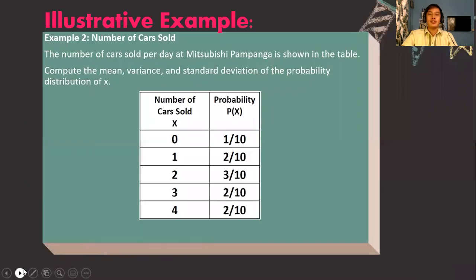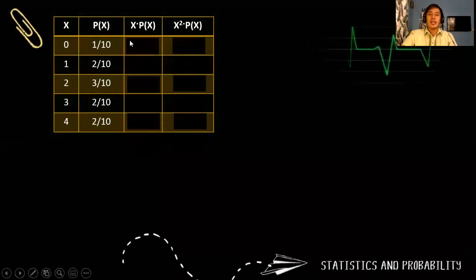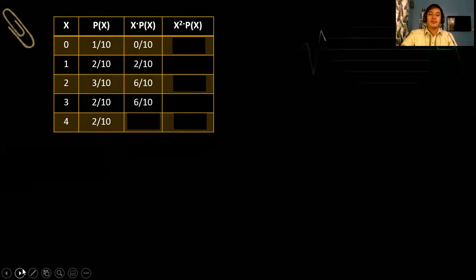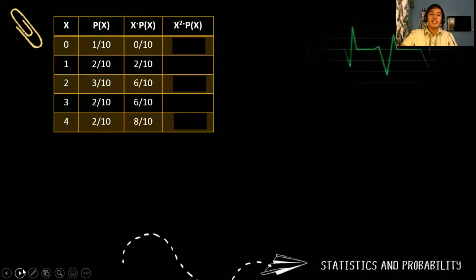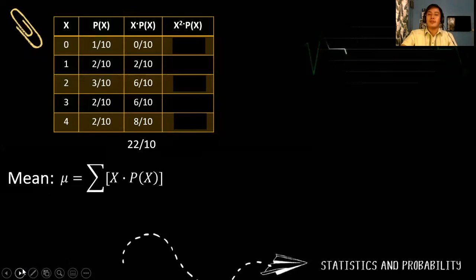Following the same procedure, we make a four-column table. For the third column, we get: 0/10, 2/10, 6/10, 6/10, and 8/10. The summation of the third column is 22/10. So mu equals 22/10, which is 2.2.